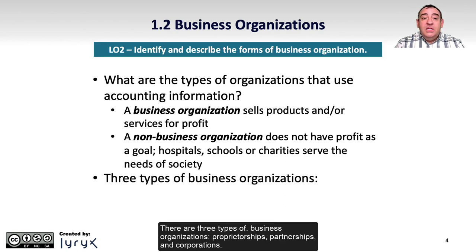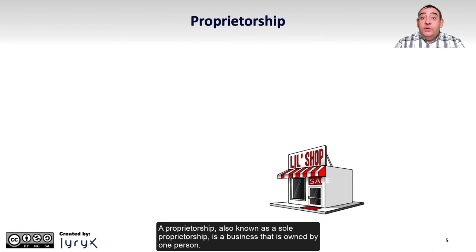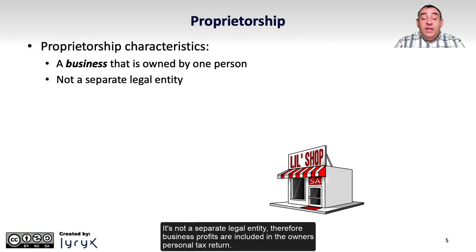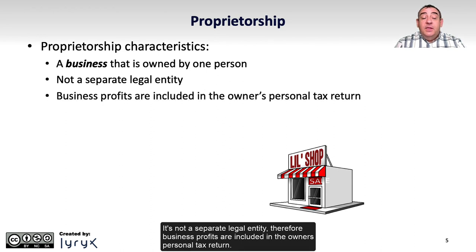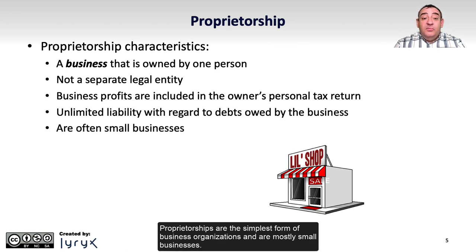There are three types of business organizations – proprietorships, partnerships, and corporations. A proprietorship, also known as a sole proprietorship, is a business that is owned by one person. It's not a separate legal entity; therefore, business profits are included in the owner's personal tax return. Proprietorships also face unlimited liability with regards to debts owed by the business, and are the simplest form of business organizations, mostly consisting of small businesses.